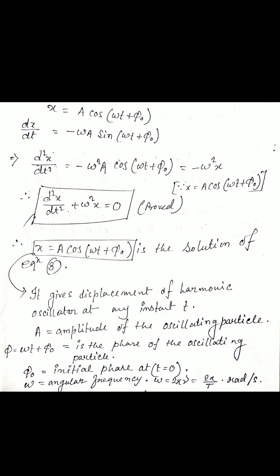In x equals A cos(ωt + φ₀): A is the amplitude — the maximum displacement of the oscillating particle. The term (ωt + φ₀) is the phase, which tells us the state of the particle at any instant. φ₀ is the initial phase at t equals zero, also called the epoch. ω is the angular frequency equal to 2π times ν, with unit radians per second.